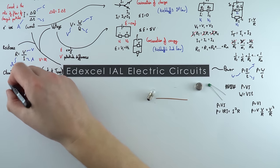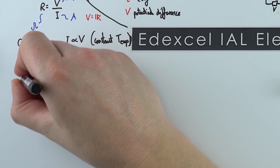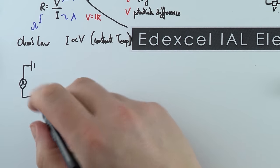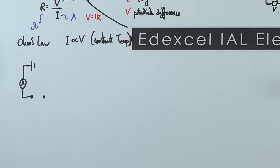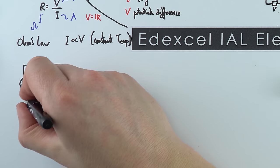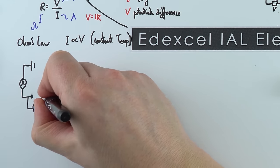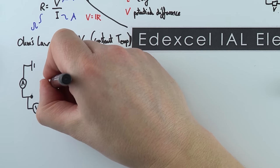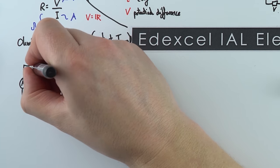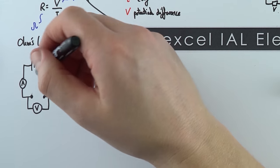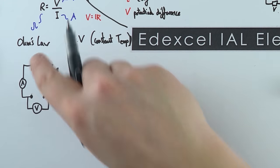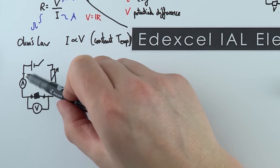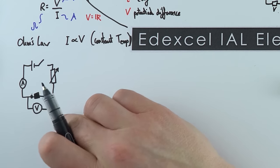In its simplest form, to test a component you connect up an ammeter to measure the current through it, and a voltmeter across it to measure the potential difference. To get different values of current and potential difference, add a variable resistor. To avoid heating effects and keep temperature constant, include a switch so you can turn it on, test the component, and record values for current and potential difference to display on a graph.